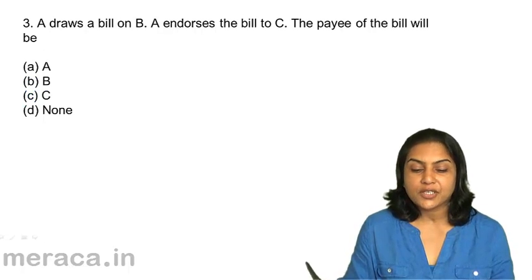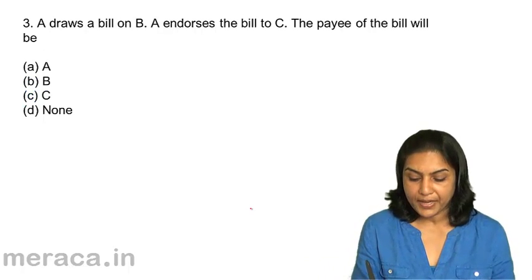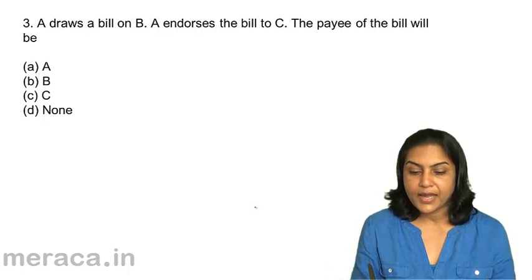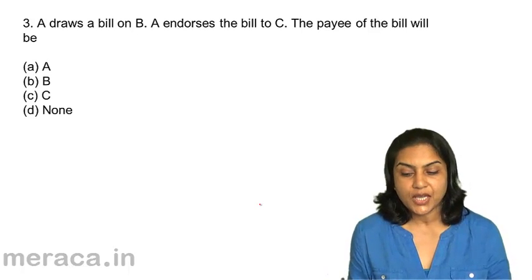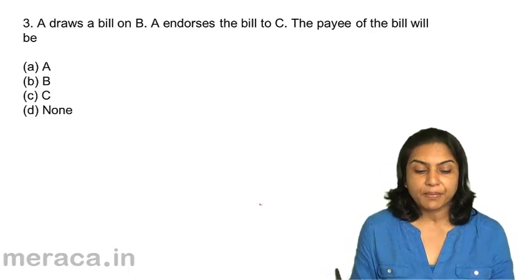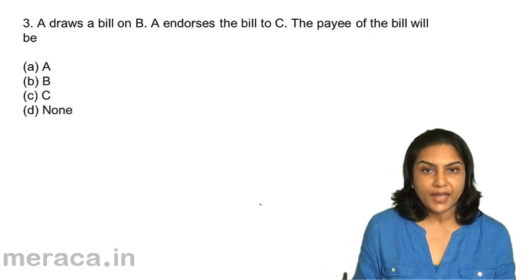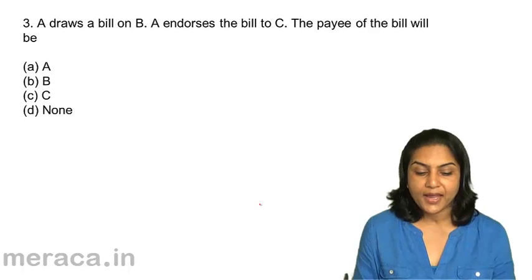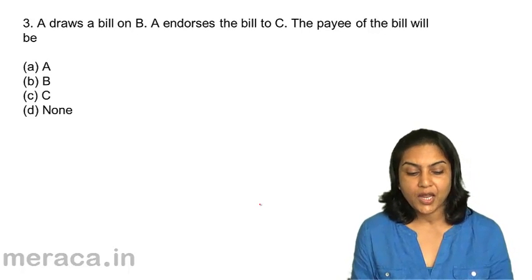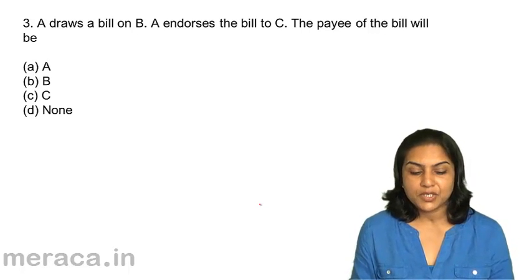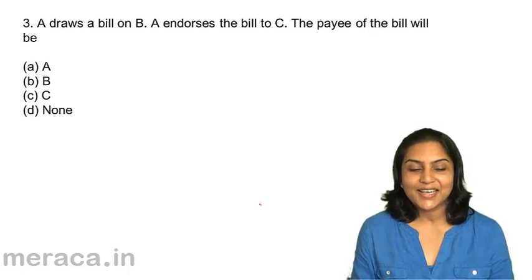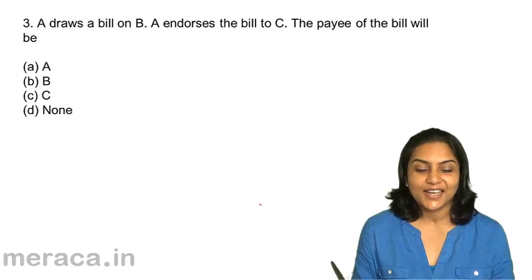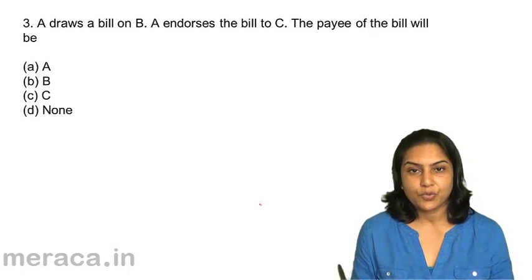A draws a bill on B. A endorses the bill to C. The payee of the bill will be: A. Mr. A, B. Mr. B, C. Mr. C, or D. None. Which would be the correct option?